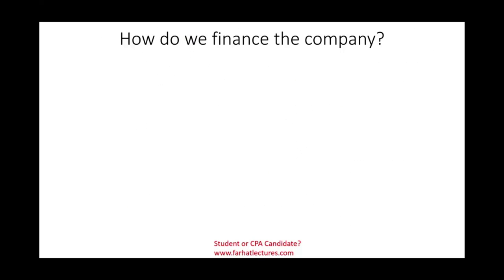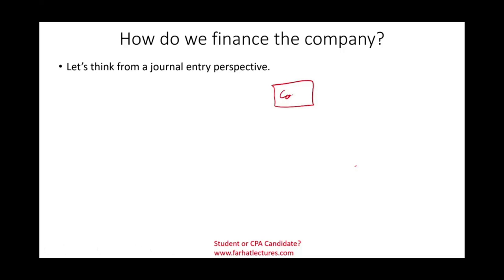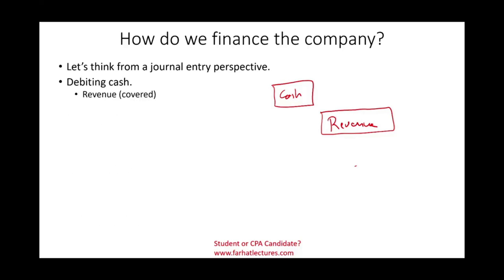Starting with the financing cycle — how do we finance ourselves? Let's think of it from a journal entry perspective. We need cash, so think about every time you debit an account called cash. One source is bringing cash from revenue. That's one source of financing, and we covered revenue in the revenue cycle. Where else do we bring cash from?